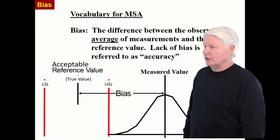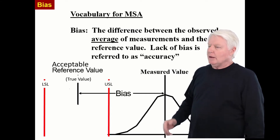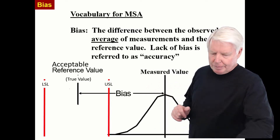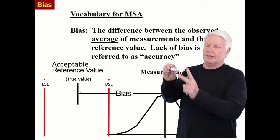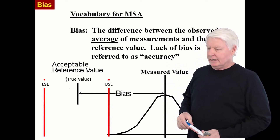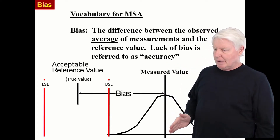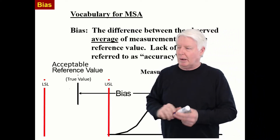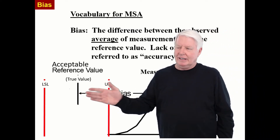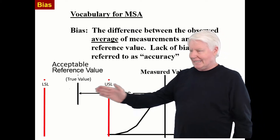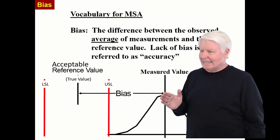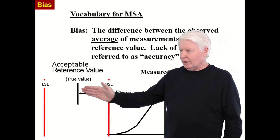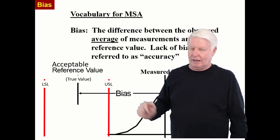Now back to the question: what is measurement bias? First of all, I measure a part. Here's my part — I measure it with some calipers, right there, the diameter. This is my measured value. But the true value of this part is over here. So this is what we say it is; this is what it really is. Bias is that distance from the measured value to the true value.